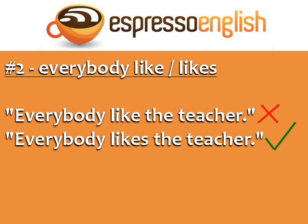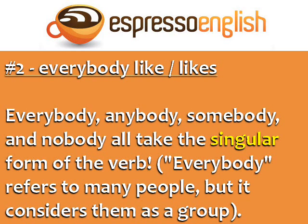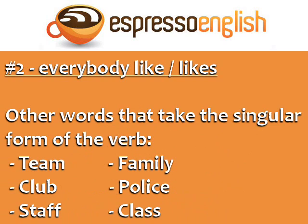Number two: everybody like or likes. "Everybody like the teacher" is incorrect. The correct sentence is "Everybody likes the teacher." The words everybody, anybody, somebody, and nobody all take the singular form of the verb. Everybody refers to many people, but it considers them as a group. Other words that refer to many people but take the singular form of the verb include: team, club, staff, family, police, and class.